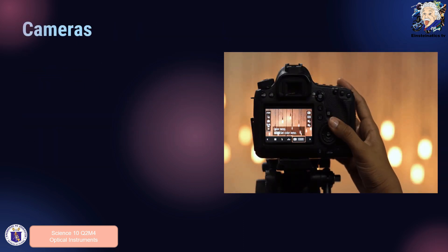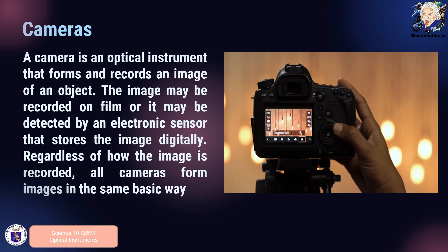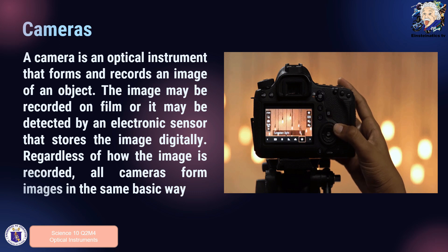The next optical instrument we are going to learn about is the camera. A camera is used to record images and videos — an indispensable tool in today's society to document our daily life. A camera is an optical instrument that forms and records an image of an object. The image may be recorded on film or detected by an electronic sensor. Whether using film or digital storage, all cameras form images in the same basic way.